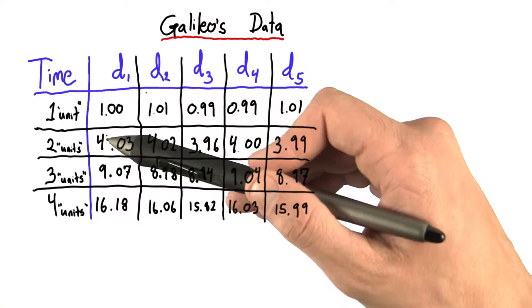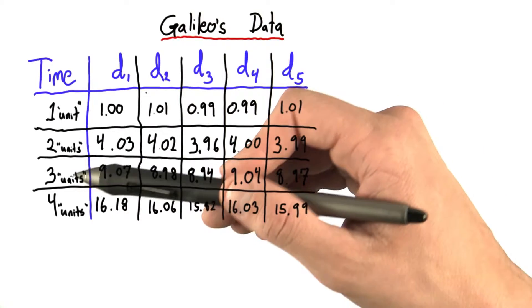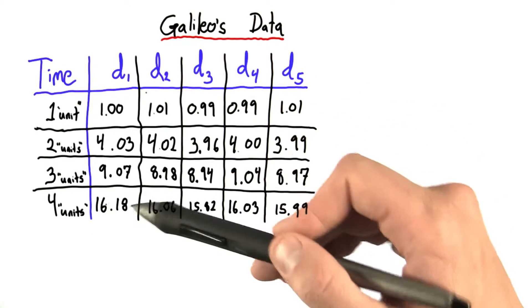After two units of time, he got 4.03. Three, 9.07, and four, 16.18.